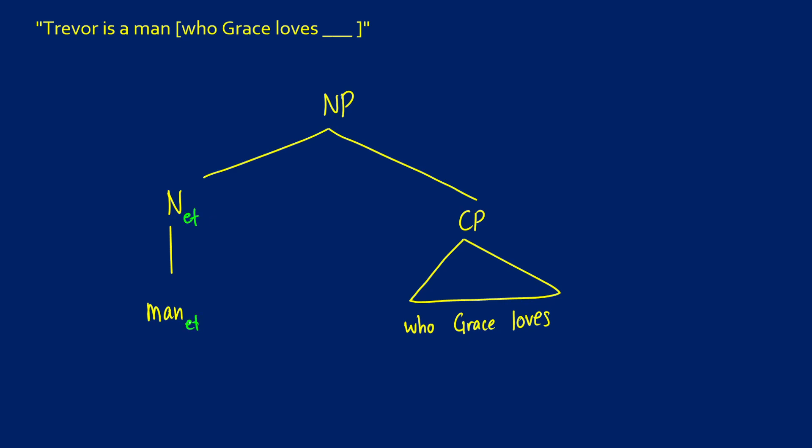So we know man is going to be an ET. That's going to be something like lambda x dot x is a man. But what does who Grace loves look like?